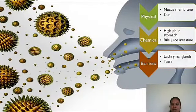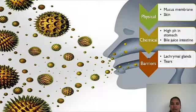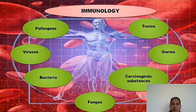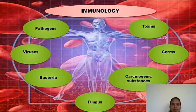There are different barriers to naturally avoid infection. Physical barriers include the mucous membrane and the skin. Chemical barriers include high pH in the stomach, bile juice, and different secretions of the intestine. There are also barriers like the lacrimal glands in the eyes, with tears acting as one of the barriers to stop infection. Immunology has to tackle different invaders like pathogens, viruses, bacteria, fungus, carcinogenic substances, germs, and toxins.